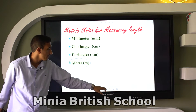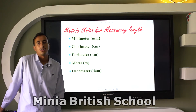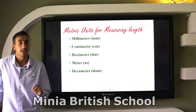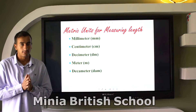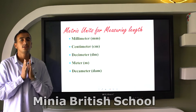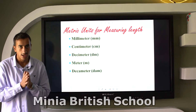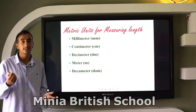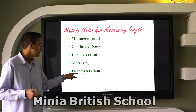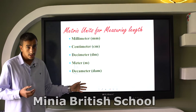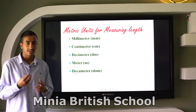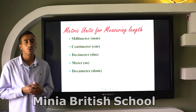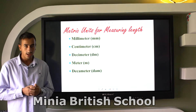After meter, we have decameter — this is a new unit we learn in Grade 4. The word 'deca' is from Latin and means 10. So one decameter equals 10 meters.